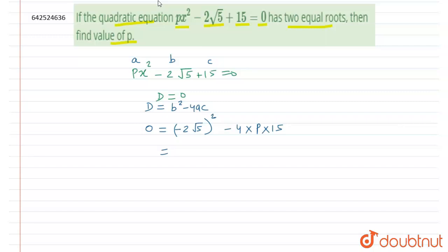So -2 square will be equal to plus 4, and √5 into √5 will be equal to 5. So minus 4 into 5 will be equal to 20 minus 4 into 15 is 60p.